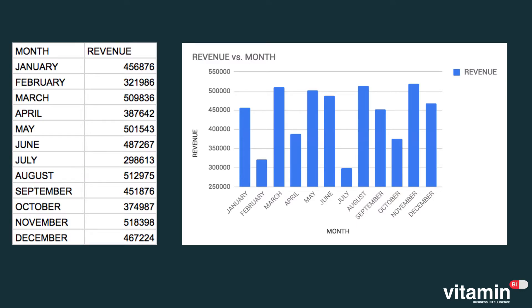Here are both side by side. You can see that with the column chart, very quickly, not only can you spot the highest value, but also the lowest, and even the distribution of values over the 12 months. And that is a great example of why we visualize data.